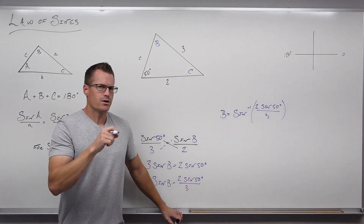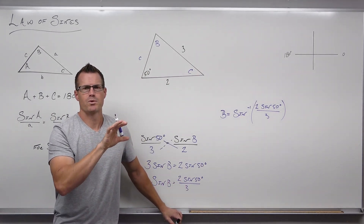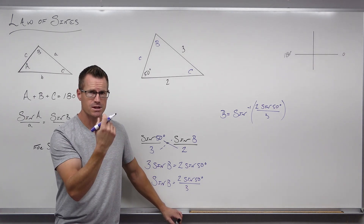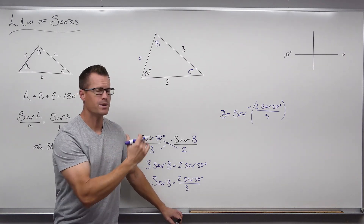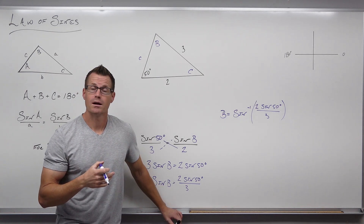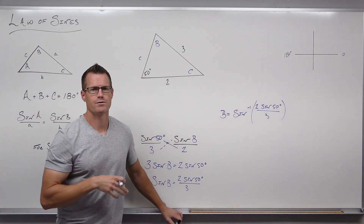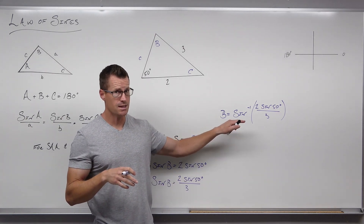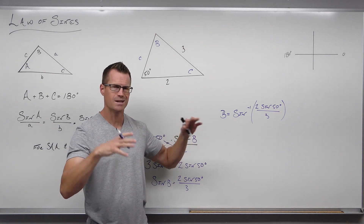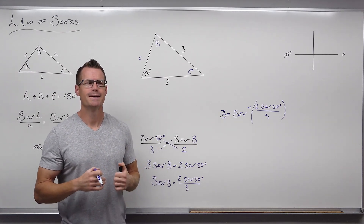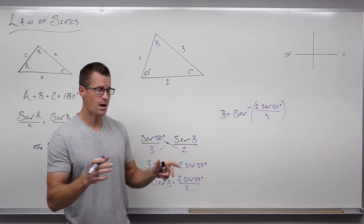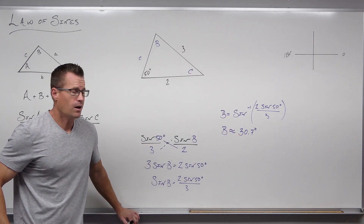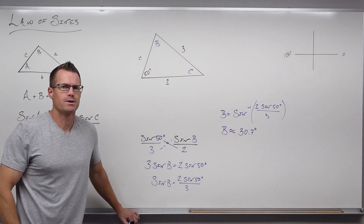Sine of angle B equals 2 sine 50 degrees over 3. Now some other information has to come about. In order to solve for angles, you need inverses. In order to solve for B, you need to take sine inverse of both sides. I also need you to remember that on a unit circle from 0 to 180 degrees, you can get two angles that give you the same y-coordinate. This is why we get more than one option for side-side-angle — because sine of an angle can have two equal positive outputs, one on each side of 90 degrees. On your calculator, press sine inverse, and we're going to get about 30.7 degrees.